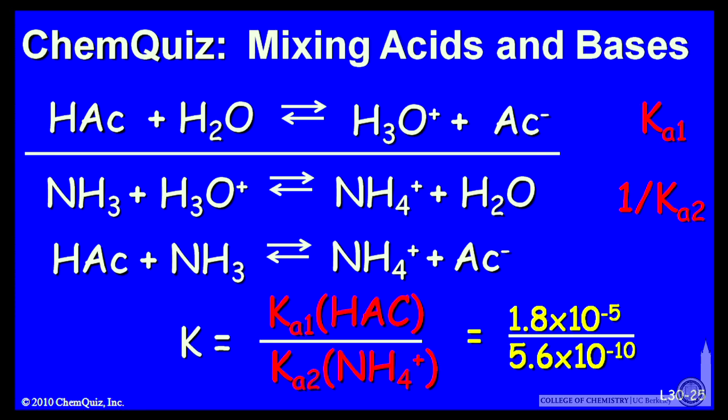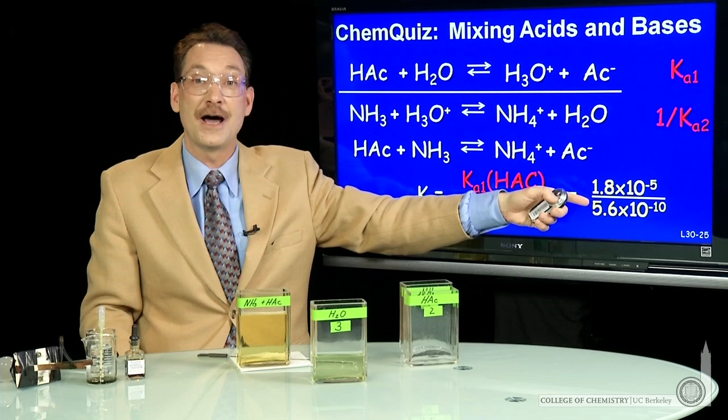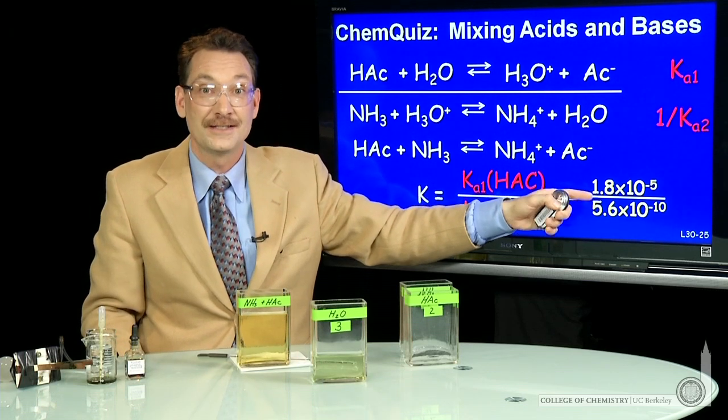5.6 times 10 to the minus 10, very much smaller, Ka2, smaller denominator. This K is around 10 to the fifth, 10 to the plus 5.